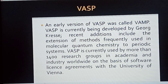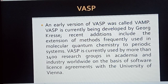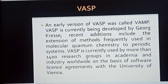VASP is a licensed software. If you do not obtain a license or permission from the University of Vienna, your calculations and results will be considered illegal. So you must obtain a proper license before doing your calculations.